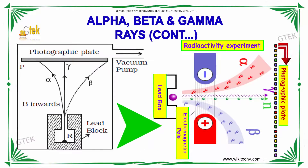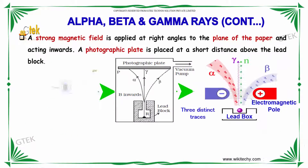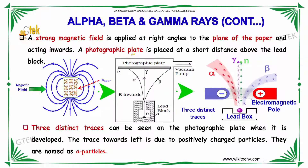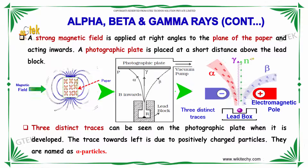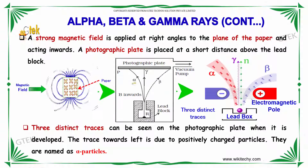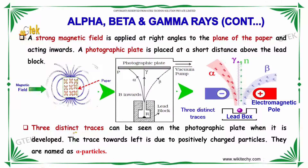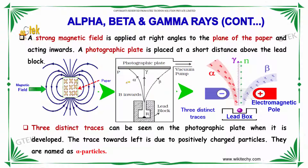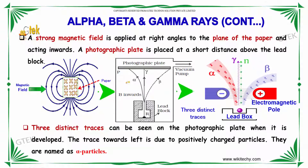A strong magnetic field is applied at right angles to the plane of the paper. A photographic plate is placed at a short distance above the lead block. Three different traces can be seen on the photographic plate when it is developed. The trace towards the left is due to positively charged particles, referred to as alpha particles.